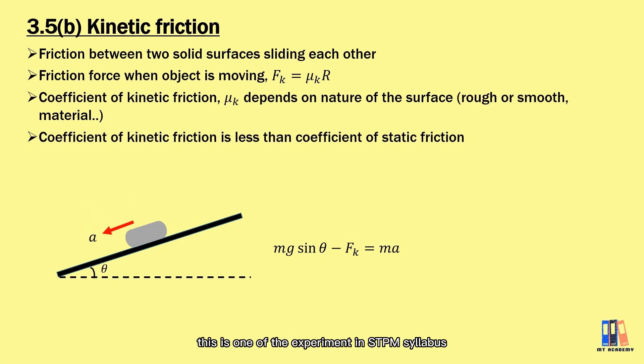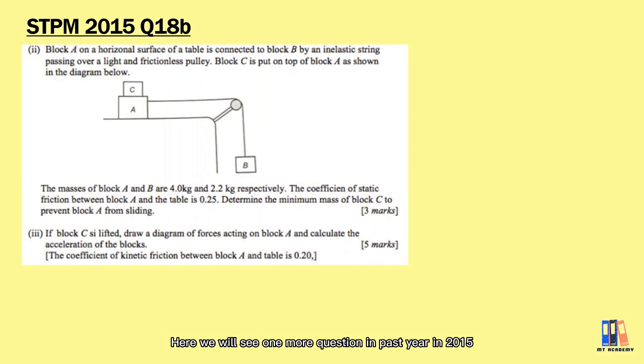If I am not wrong, this is one of the experiments in SPM syllabus which you can test and try by yourself. So here we will see one more question from past year 2015. As shown in the picture, we have block B trying to pull blocks A and C to the right. Mass of block A and B are given as 4 kg and 2.2 kg. Coefficient of static friction between block A and the table is 0.25.